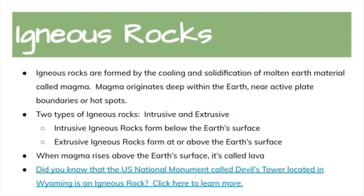Extrusive rocks form when lava erupts and oozes around the earth's surface and cools down. These rocks form quickly and you can often see the gas bubbles trapped inside. When magma rises above the earth's surface it's called lava. Did you know that the U.S. National Monument called Devil's Tower, located in Wyoming, is an igneous rock? You can click on the slide to learn more.